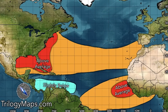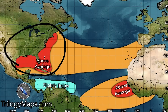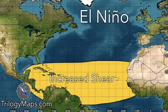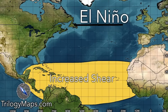Looking at sea surface temperature anomalies, we expect above average temperatures near the coasts, which is impactful because we could see rapid development as storms approach. We have slightly below average waters in the southern Caribbean — though that map is a bit outdated — and above average waters in the southern MDR area. This year is becoming a very strong El Niño, and we have new data from the last few days to discuss.